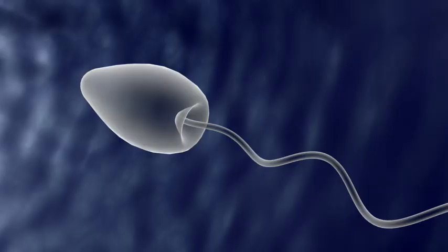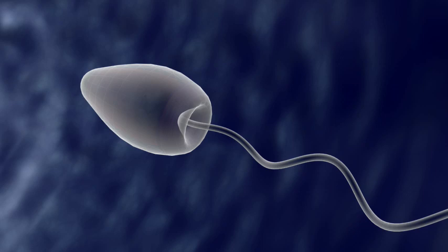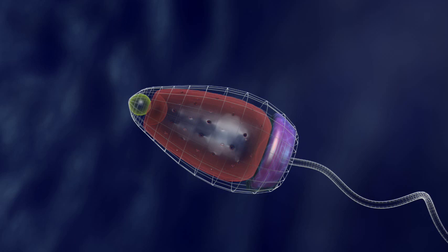Before we continue to follow the sperm's journey, let's look at its inner structures. The mitochondria produces ATP to supply energy for the sperm movement. The nucleus carries the DNA for genetic information. The acrosome is the vesicle at the tip of the sperm head.